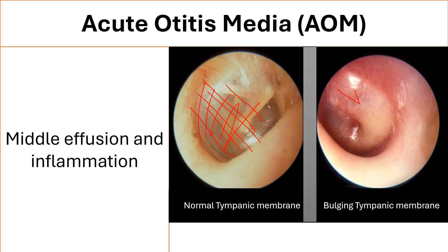Simply, if the child is crying, the tympanic membrane may turn red and will return to normal color once the child is no longer crying.